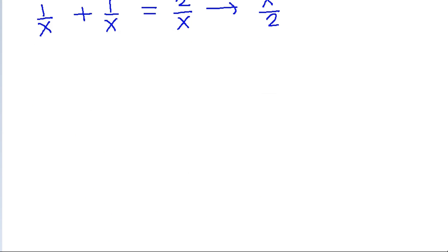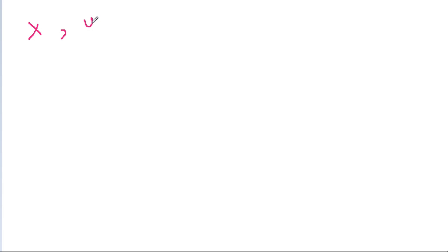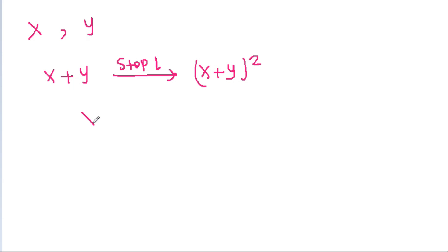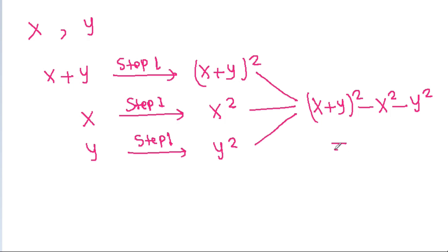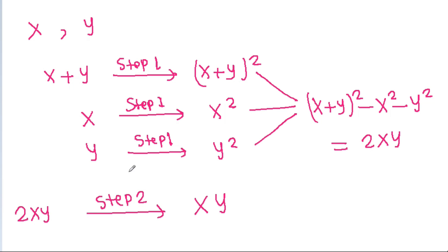The answer to our problem: we have x and y, so we can find x + y. By step one, we can find (x + y)². We also find x² and y² using step one. Then we subtract x² and y² from (x + y)², giving (x + y)² − x² − y² = 2xy. Finally, using step two on 2xy, we can get x·y. This is the solution to our problem.